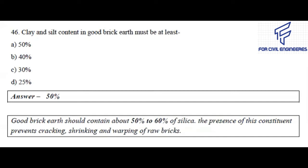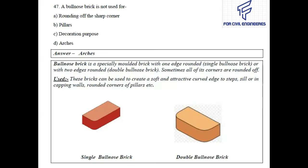Question number 46: Clay and silica content in good brick earth must be at least — 50%, 40%, 30%, or 25%? The right answer is 50%. Good brick earth should contain about 50 to 60 percent of silica. The presence of this constituent prevents cracking, shrinking, and warping of raw bricks.